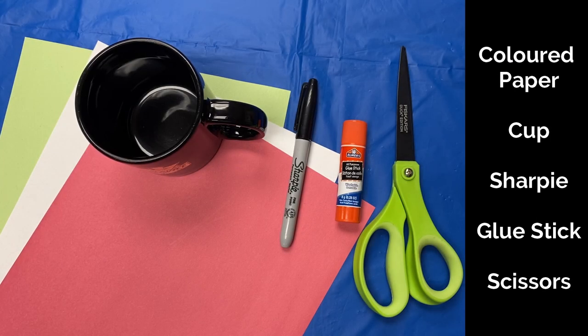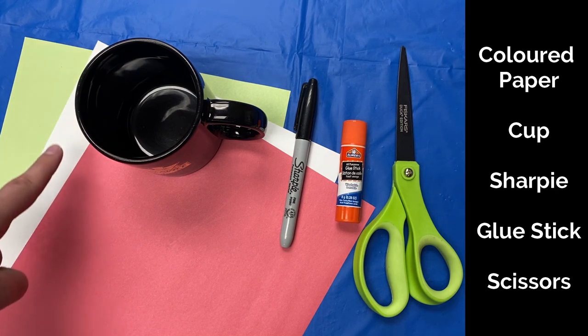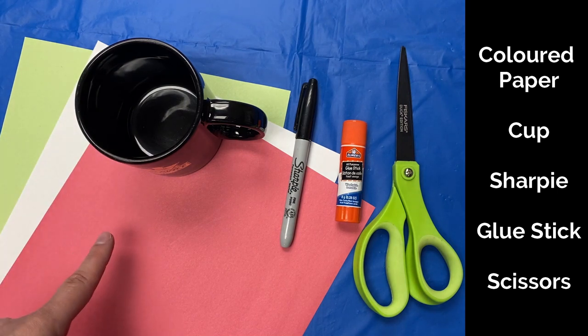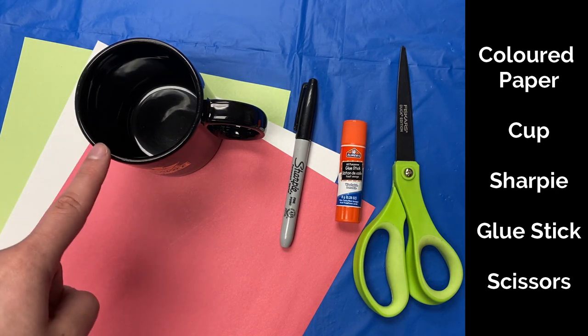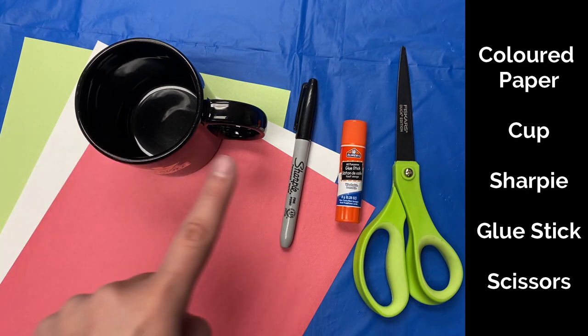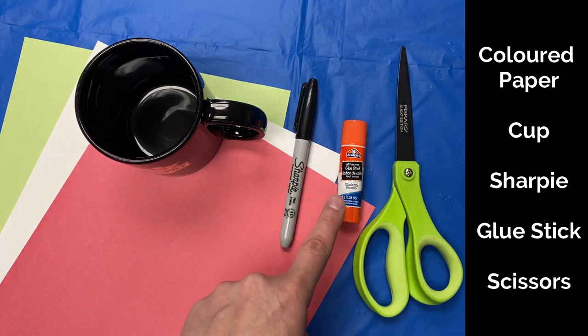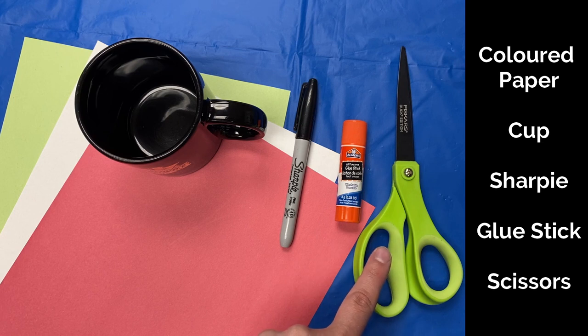You will need green, white, and red paper, a cup to trace a circle, a sharpie, a glue stick, and a pair of scissors.